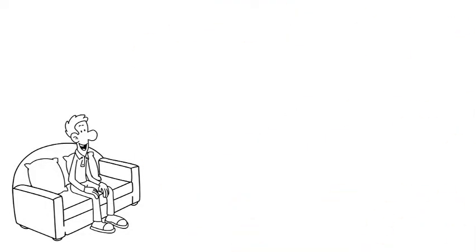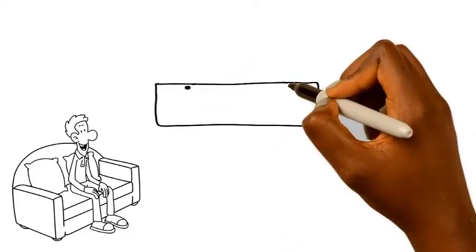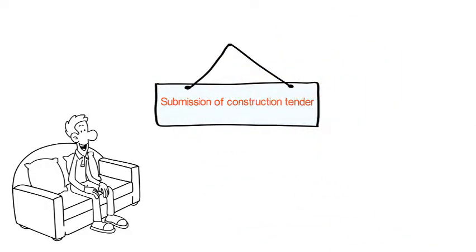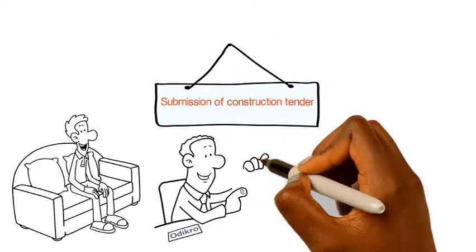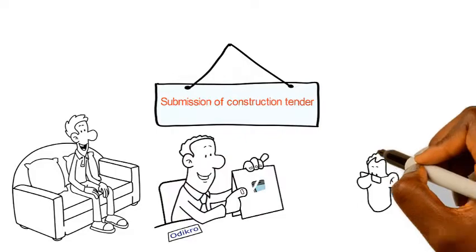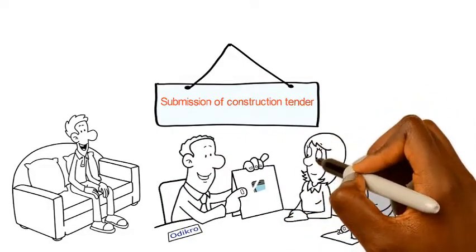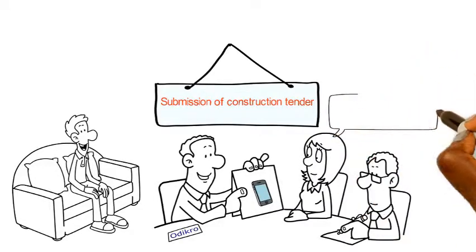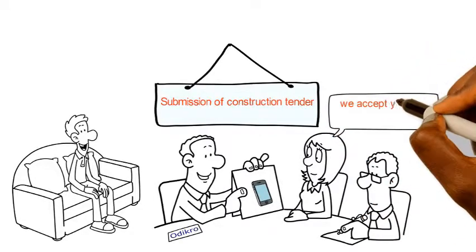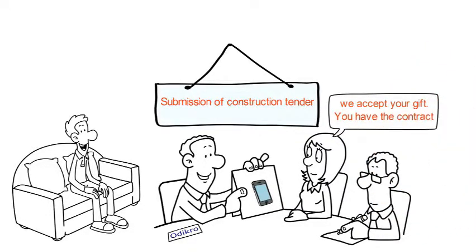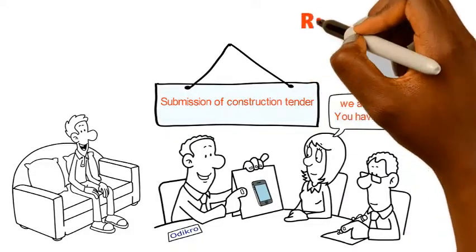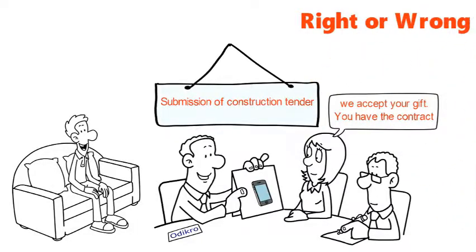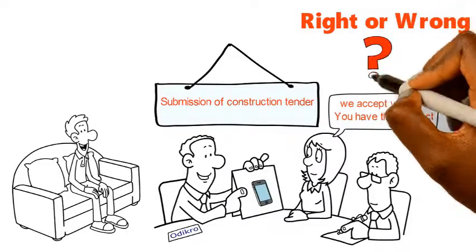Scenario 11. The company Odikro Ltd takes part in a school construction tender. It gave mobile phones to the members of the tender committee to facilitate the work of the committee, as the representatives of the company put it. The tender committee accepts the gifts and awards the contract to Odikro Ltd. Is this right? Why is this right or wrong?